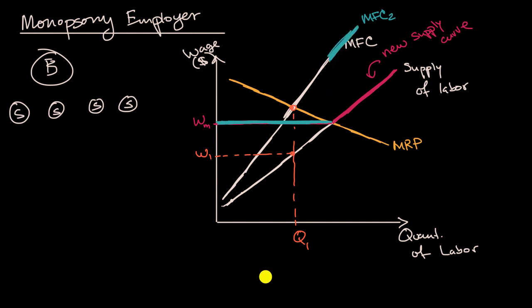But what's rational, as always, is a firm to keep hiring as long as the marginal revenue product is higher than the marginal factor cost. So it's going to keep hiring, as long as this yellow line is above the blue line, it would keep hiring, all the way until this point right over here. So notice what just happened. It is now rational for the firm to hire more people. And that is counterintuitive.